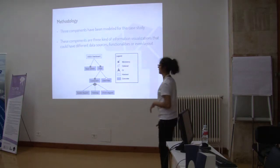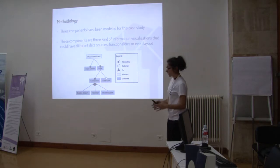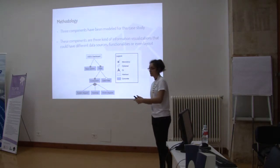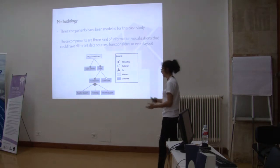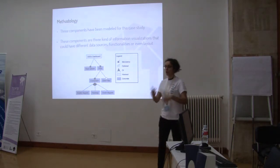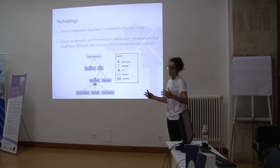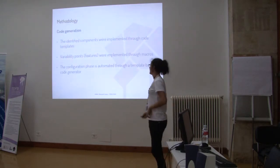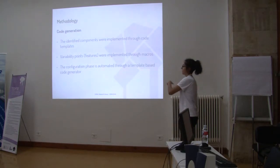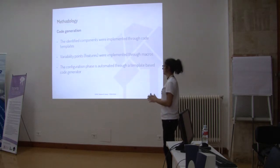In the case of the observatory, three components have been modeled. The dashboard could have different components and different pages — a page with different components such as a scatter diagram, a heatmap, a coordinate diagram, each component with different features. This is a high-level view of the feature diagram. These components were implemented through code templates and variability points, the features, were implemented through macros.